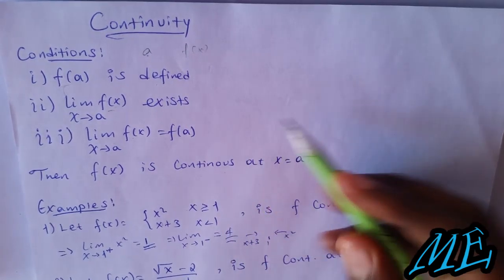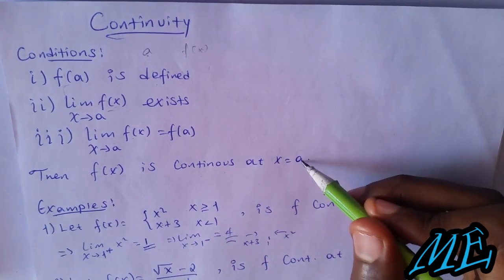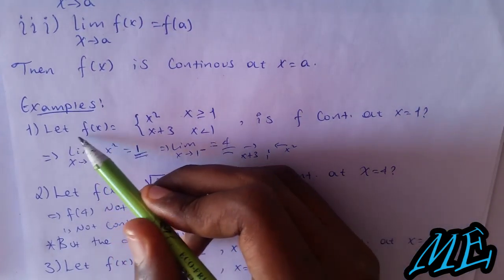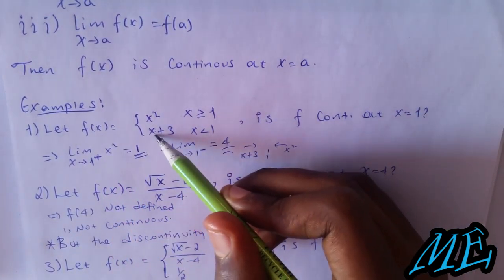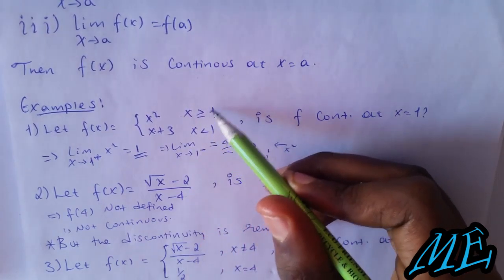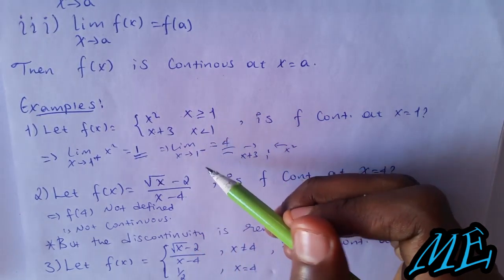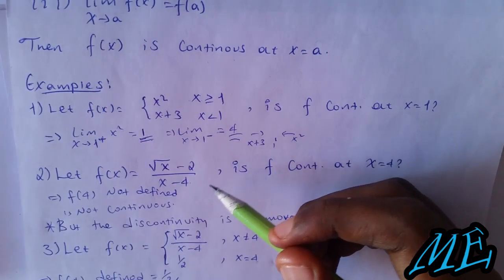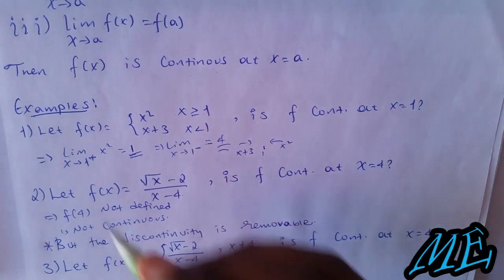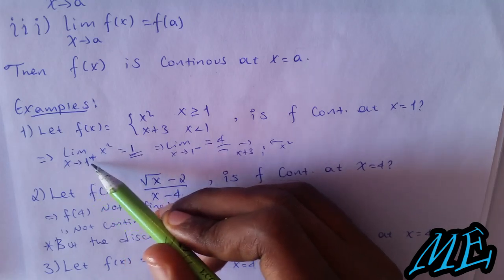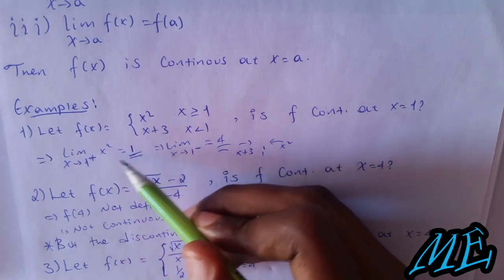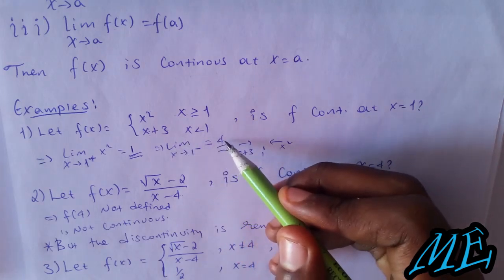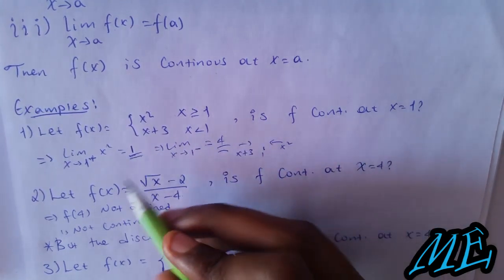Example 1: Let f(x) be piecewise, x² when x ≥ 1, and x + 3 otherwise. Is f continuous at x = 1? Limit as x approaches 1 is 1, and 1² is also 1. So this is equal, therefore continuous.